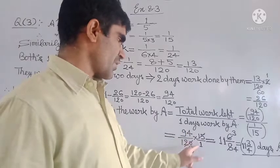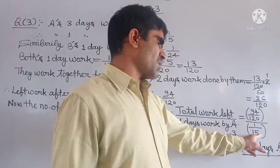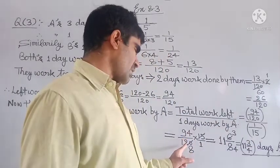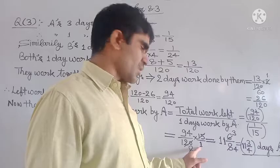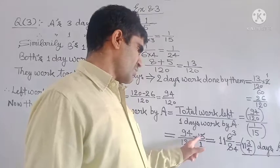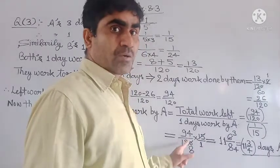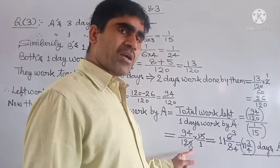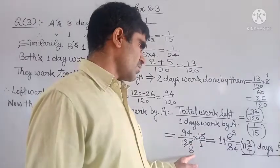So 94 upon 120 divided by 1 upon 15. We multiply 94 upon 120 times 15 upon 1. 120 divided by 15 is 8. So the number of days is 94 upon 8.